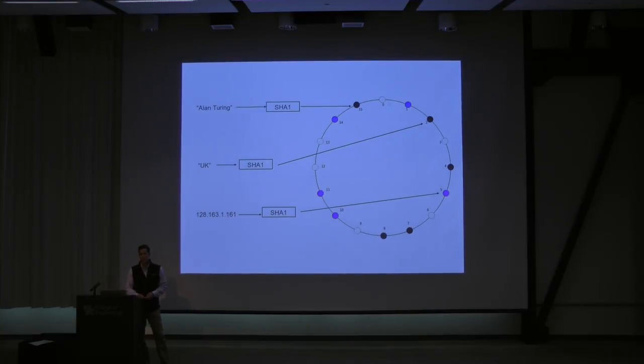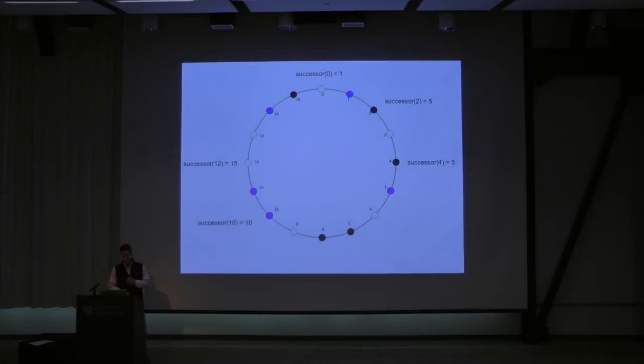You'll notice that this is arranged in a circle. We'll call this the identifier circle, and it's an important property of CHORD. The reason that it's important is that you've got 2 to the 160 hash functions, right? And you just want to think of this as modular arithmetic. So at 2 to the 160, you roll back over to value zero. And the notion of successors and predecessors is important. So the node that succeeds you comes clockwise in the circle, and your predecessor can be found going counter-clockwise.